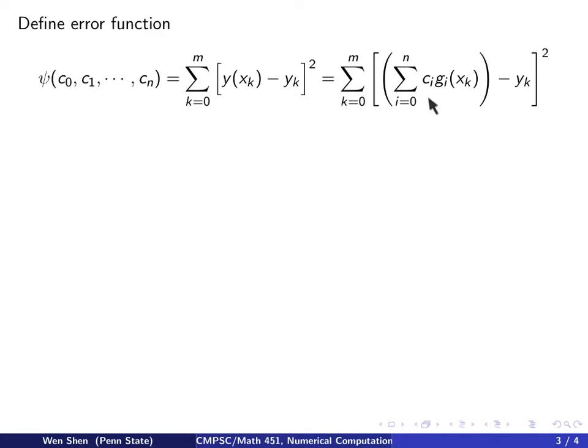y is the summation of c_i times g_i evaluated at x_k, minus y_k. The whole thing is squared. We also know that at the minimum for this function ψ, we must have the following.